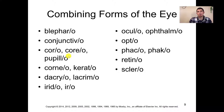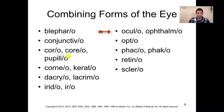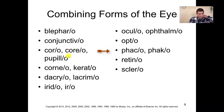Some important combining forms: blepharo meaning eyelid; conjunctivo, which we know from conjunctivitis for pink eye; core, corio, and pupilo all refer to the pupil; corneo or kerato refer to the cornea; dacra and lacrim are both for the tear ducts; irito or iro for iris; oculo or ophthalmo for the eye in general; opt meaning vision; and phaco or phako referring to the lens of the eye. Retino for the retina, and sclero for the sclera.